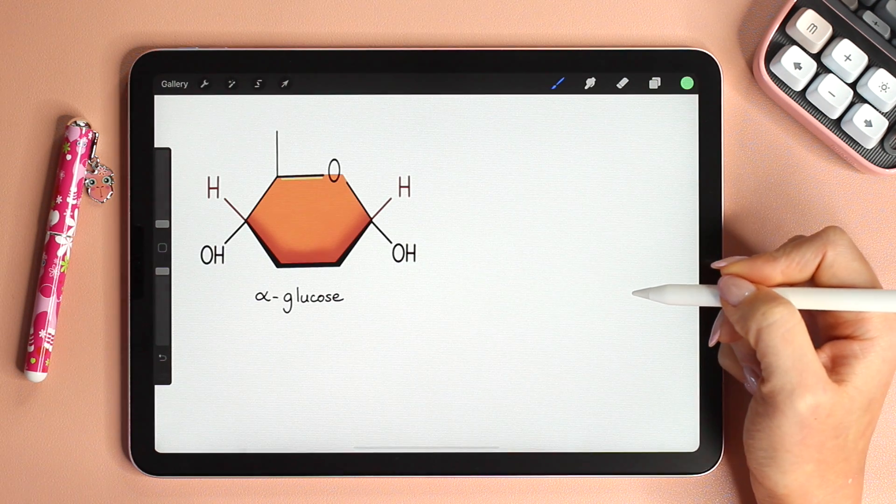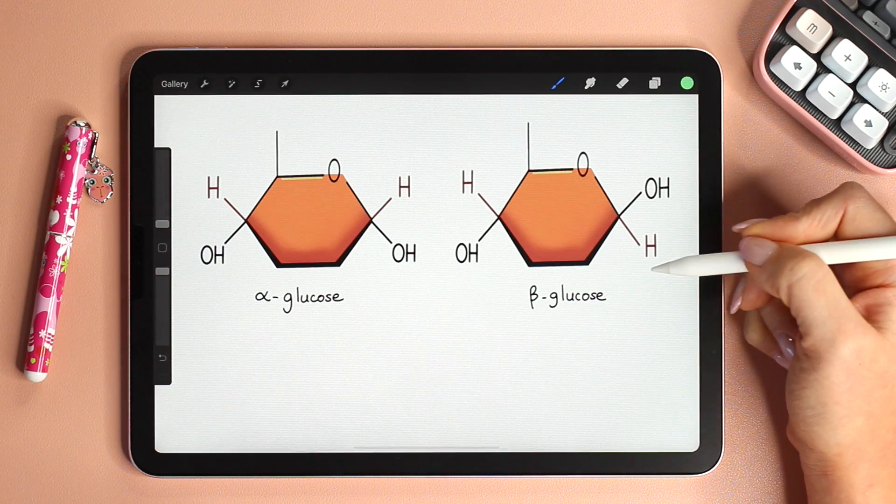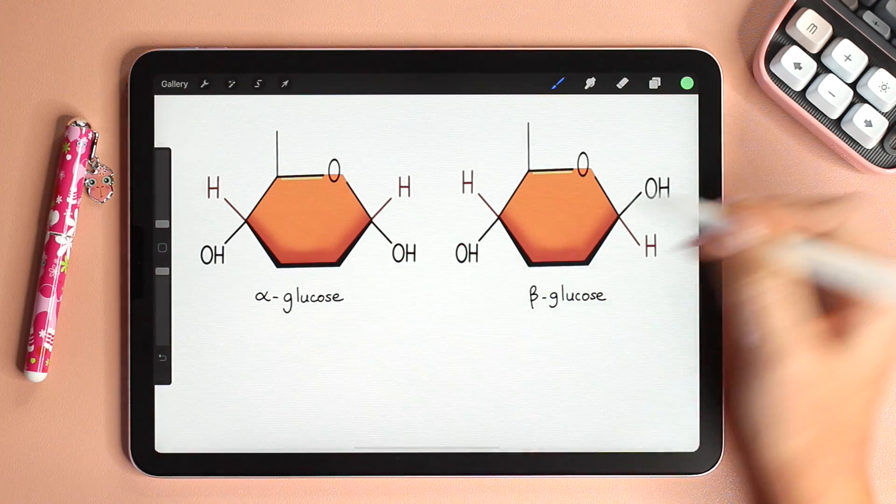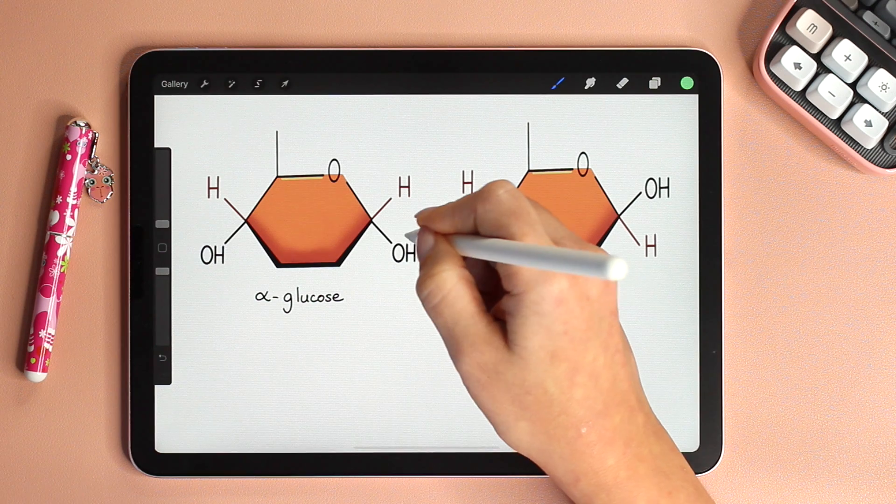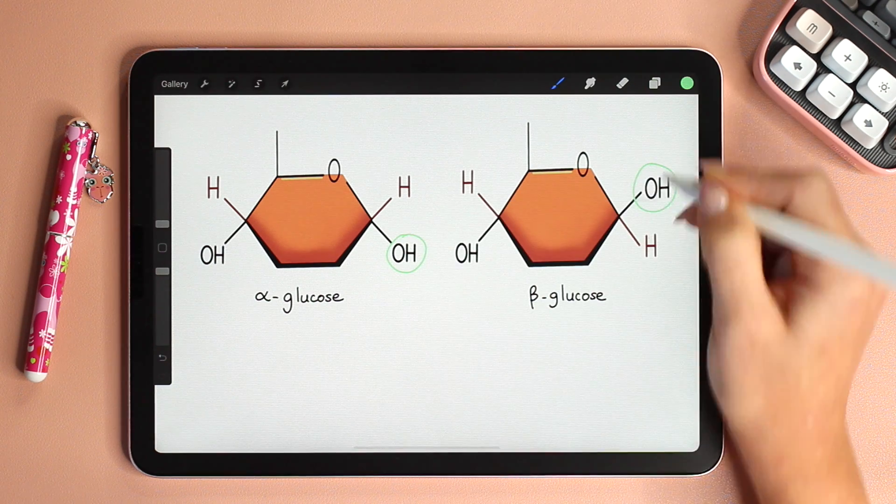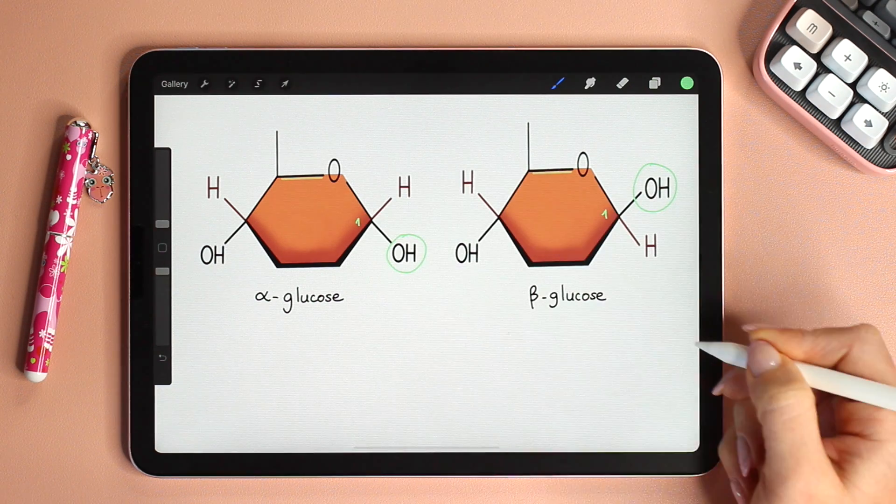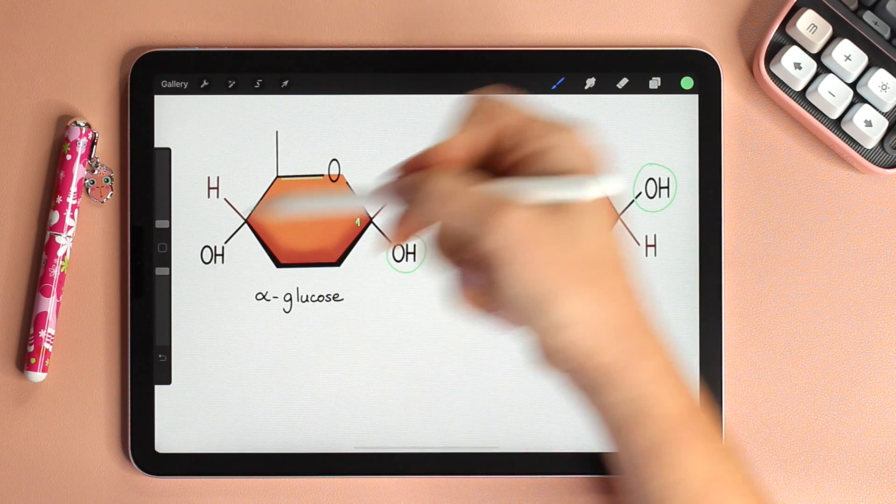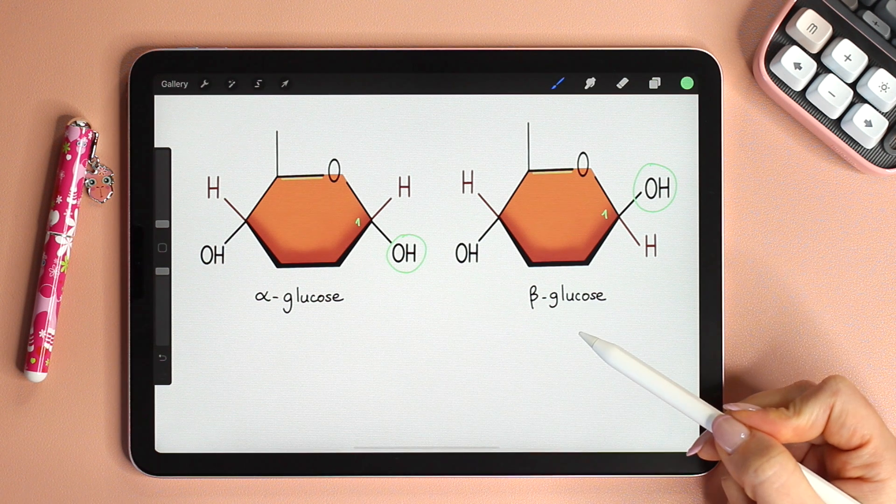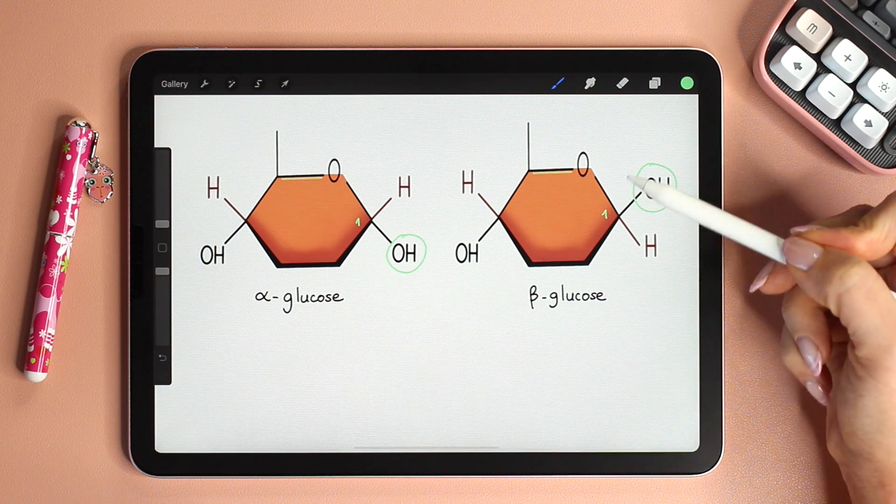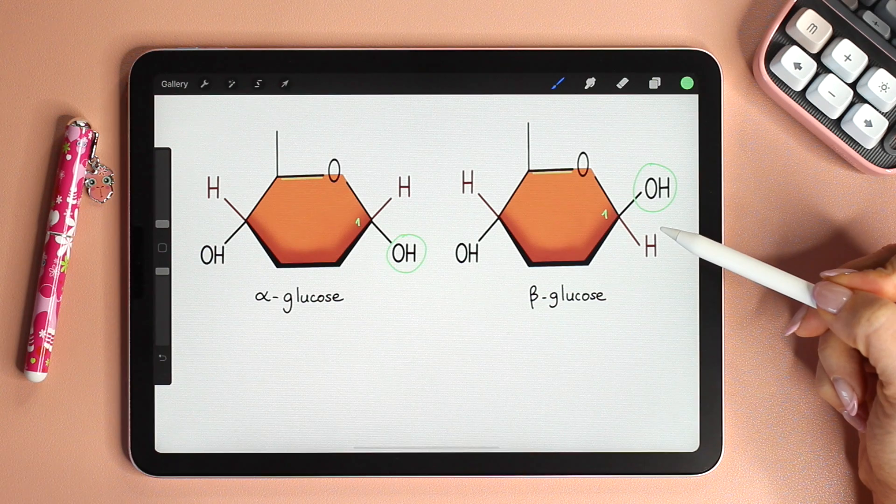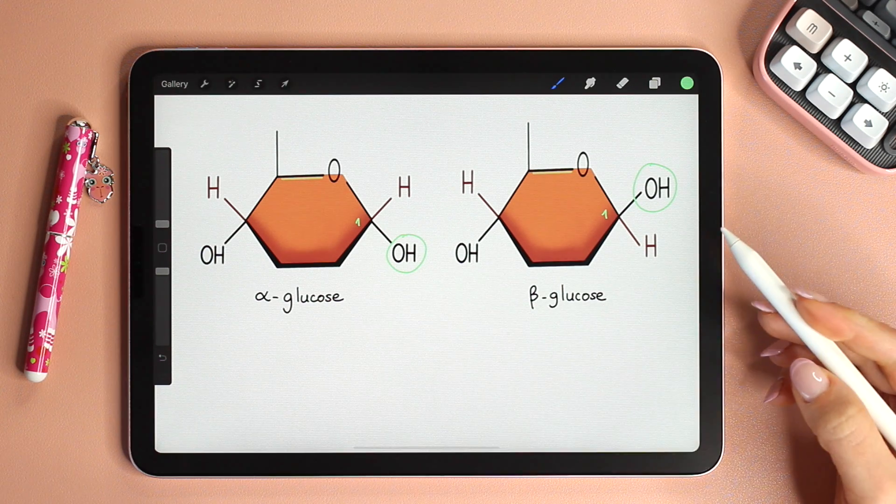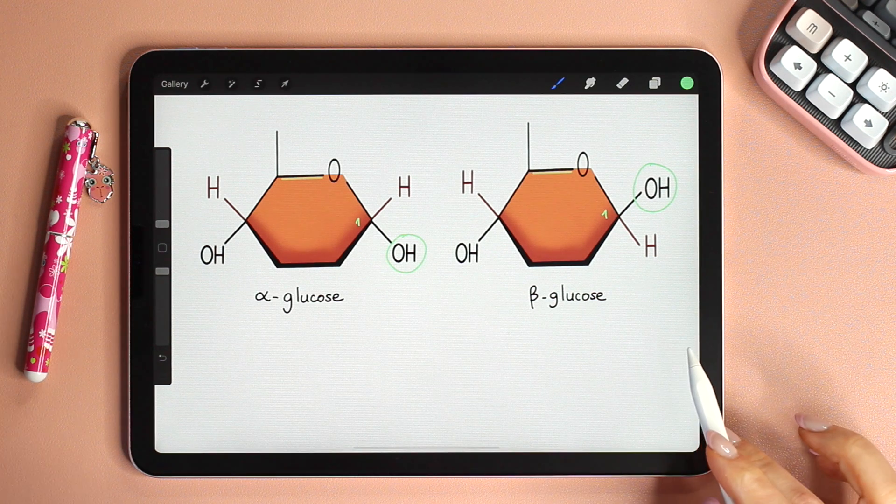This is an alpha glucose and this is a beta glucose. They are isomers called anomers. The only difference between them is the orientation of the hydroxyl group on carbon number 1. In alpha glucose the hydroxyl group is positioned below the plane of the ring whereas in beta glucose it is positioned above the plane of the ring. And this little difference will lead to major differences once they form polymers.